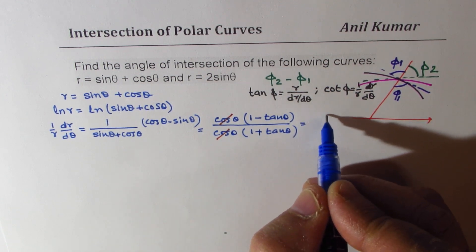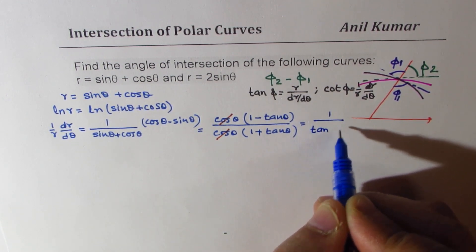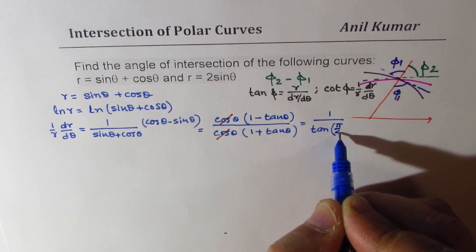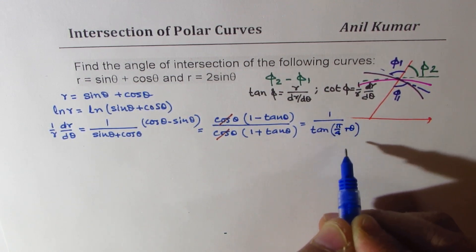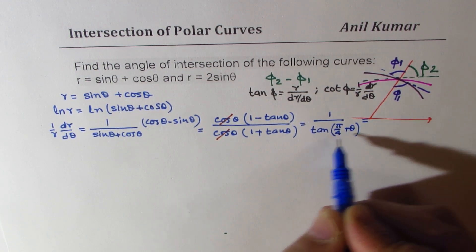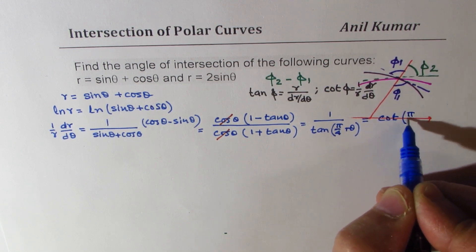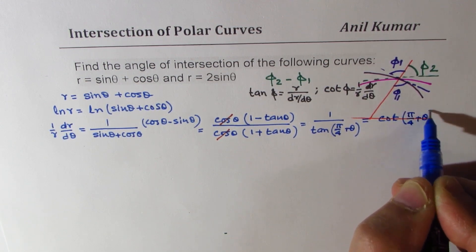So it could be written as 1 over tan pi by 4 plus theta, or this could be written as cot pi by 4 plus theta. Do you see that part?